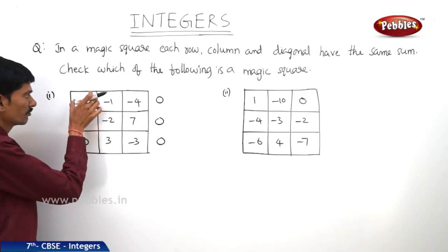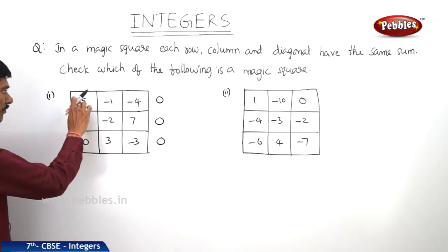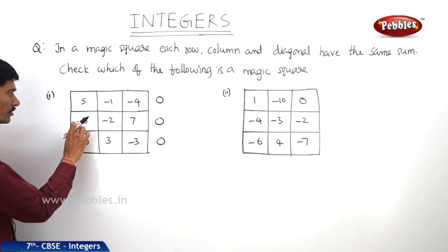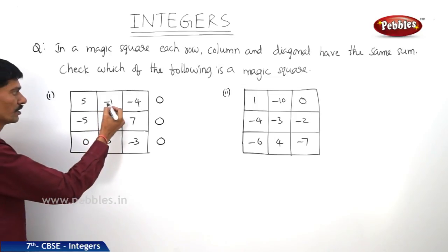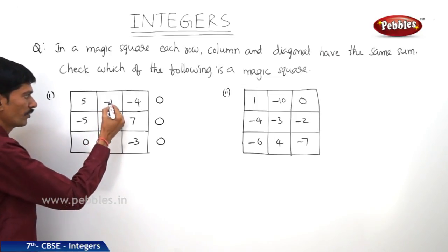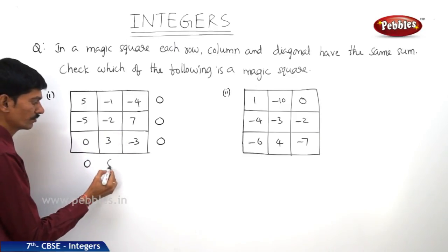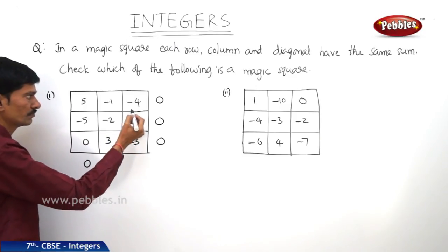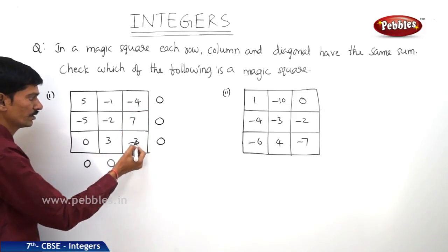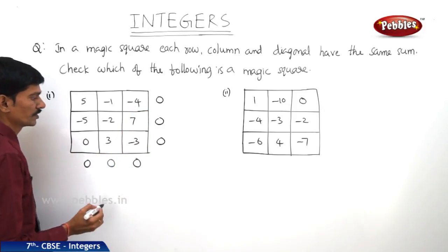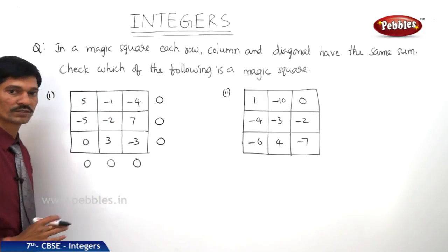Now let us check the sum of the numbers in each column. Now 5 minus 5 is 0, and 0 plus 0 is 0. Then in the second column, minus 1 minus 2 is minus 3, and minus 3 plus 3 is 0. And in the third column, minus 4 plus 7 is 3, and 3 minus 3 is 0. So in each column also, the sum of the numbers is 0.